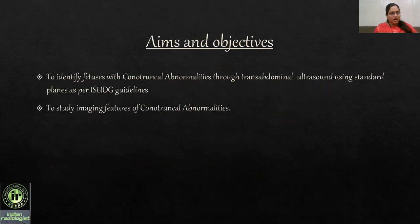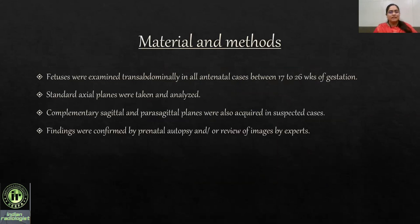The aims and objectives of our study were to identify fetuses with conotruncal abnormalities through transabdominal ultrasound using standard planes as per ISO guidelines, and to study imaging features of conotruncal abnormalities. Fetuses were examined transabdominally in all antenatal cases between 17 to 26 weeks of gestation. Standard axial planes were taken and analyzed. Complementary sagittal and parasagittal views were also acquired in suspected cases to look at the aortic arch, ductal arch, and the bicaval view. Findings were confirmed by prenatal autopsy or review of images by experts.